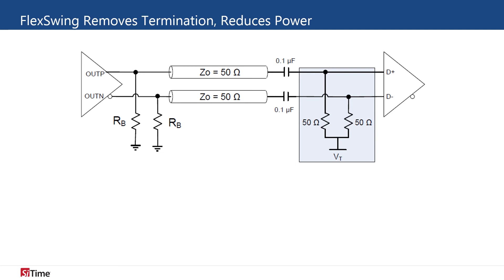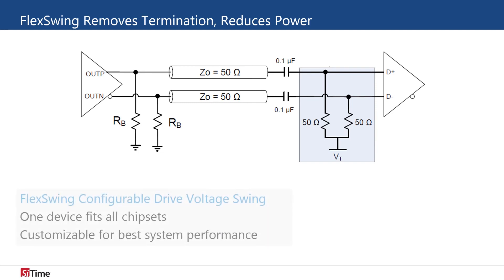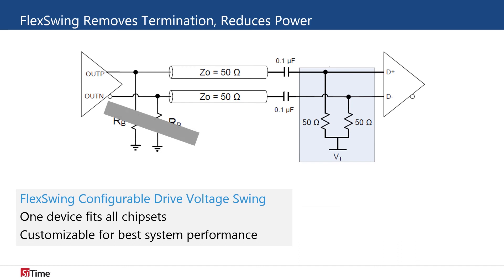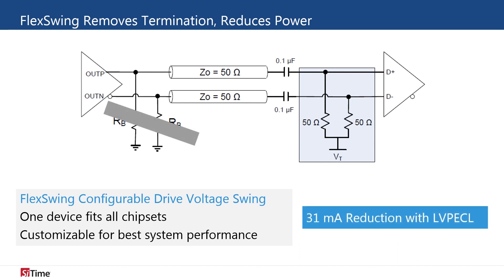Atena's drive voltage swing can be programmed to a custom configuration at the factory to meet the exact needs of any ASIC. By matching the precise needs of the ASIC, the typical termination can be removed, reducing current consumption by up to 31 mA with an LV-PECL output.